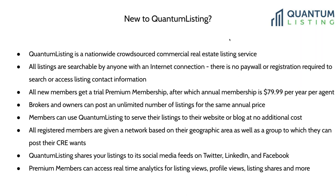All new members get a trial premium membership, after which membership is $79 per year per agent. Brokers and owners can post an unlimited number of listings for the same annual price. Members can use Quantum Listing to serve their listings to their website or blog at no additional cost, and all registered members are given a network based on their geographic area, as well as a group to which they can post their commercial real estate wants. Quantum Listing shares your listings to its social media feeds on Twitter, LinkedIn, and Facebook, and premium members can access real-time analytics for their profile views, listing views, listing shares, and more.